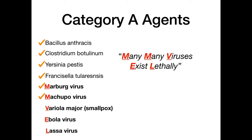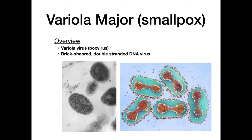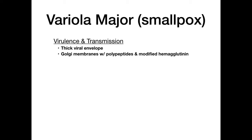Variola major — smallpox — is caused by the variola virus, a poxvirus. It is a brick-shaped, double-stranded DNA virus with a thick viral envelope, Golgi membranes with polypeptides, and modified hemagglutinin. There is a characteristic brick-shaped appearance on microscopy — if you see that image, the answer is smallpox. The most high-yield feature is the symptom progression over a 7–19 day incubation period: it starts with sores in the mouth.